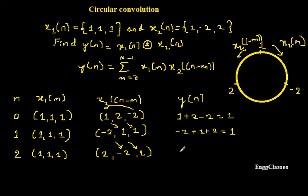So just multiply everything term by term. 1 into 2 it is 2. 1 into -2 it is -2. 1 into 1 it is 1. You are going to get it as 1.